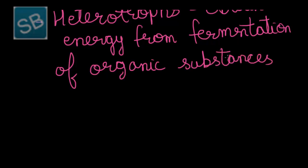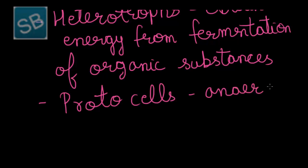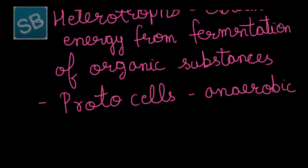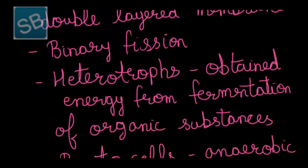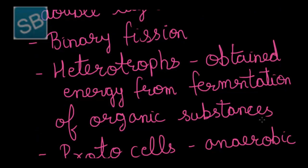These organic substances remained dissolved within the sea. In this manner, the protocells that were formed were anaerobic in nature. The basic properties possessed by pre-cells or protocells were: spherical shape, double-layered membrane, heterotrophic, anaerobic, and exhibiting reproduction by binary fission method.